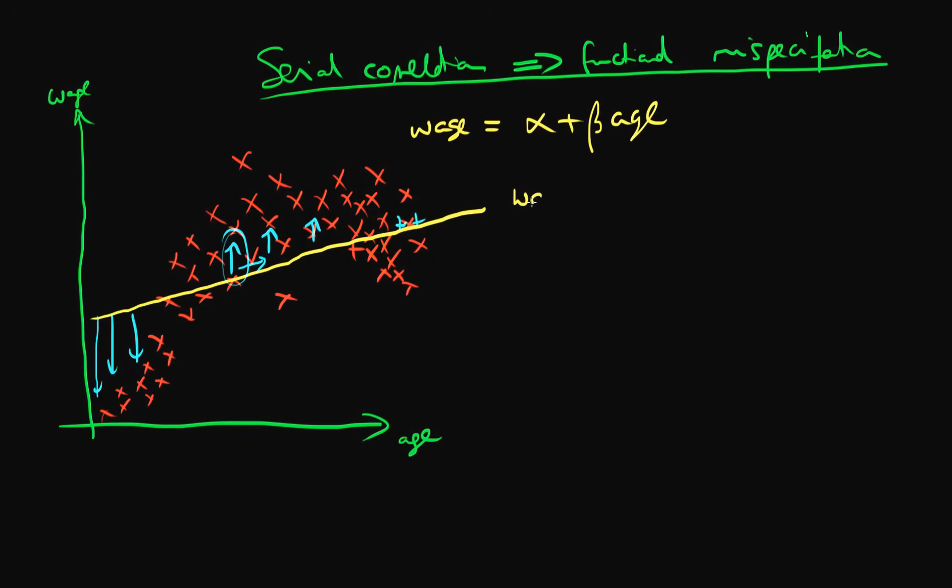If instead I had fit a line which was wage rate equals alpha plus beta 1 times age plus beta 2 times age squared, where we'd expect that beta 2 is less than 0 to capture the fact that we have diminishing returns to age, then perhaps my estimated model might look something like that.